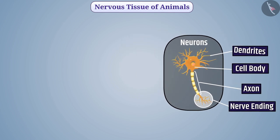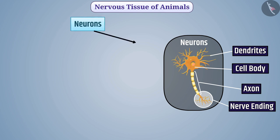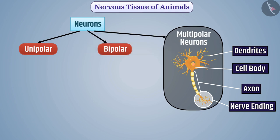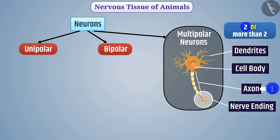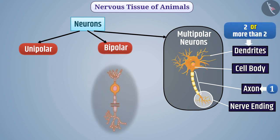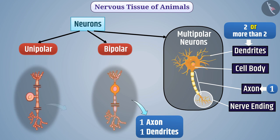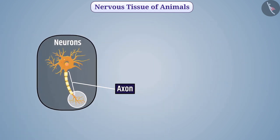On the basis of the number of dendrites and axons, neurons are classified into multipolar, bipolar, and unipolar neurons. In a multipolar neuron there is one axon and two or more dendrites. In a bipolar neuron there is one axon and one dendrite. In a unipolar neuron there is only a cell body and one axon.